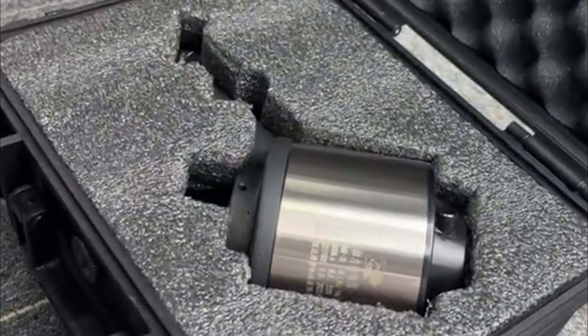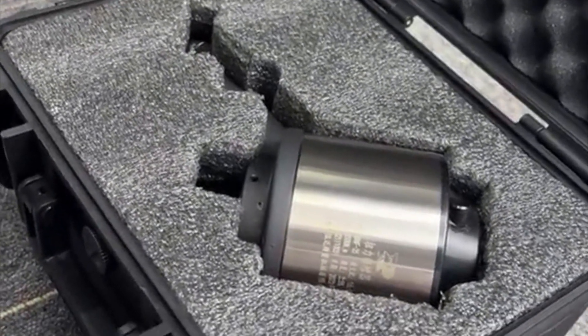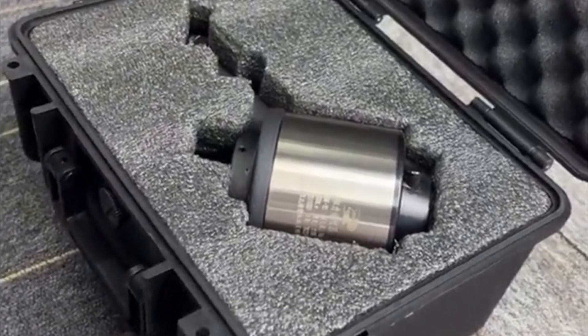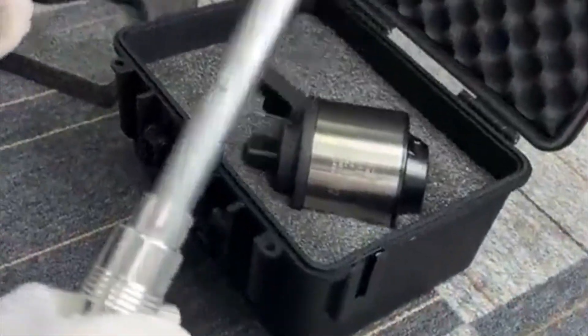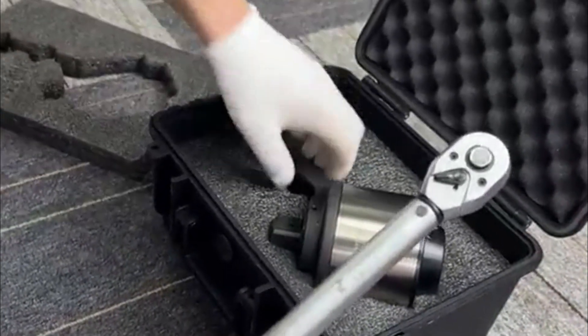This is a maximum torque of 3500 Nm torque multiplier with 11.16 times the ratio. Today we use this torque multiplier with this torque wrench. A torque wrench up to 60 Nm will be demonstrated.